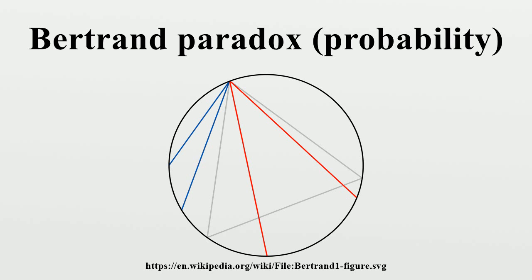Bertrand's formulation of the problem goes as follows. Consider an equilateral triangle inscribed in a circle. Suppose a chord of the circle is chosen at random. What is the probability that the chord is longer than a side of the triangle? Bertrand gave three arguments, all apparently valid, yet yielding different results.